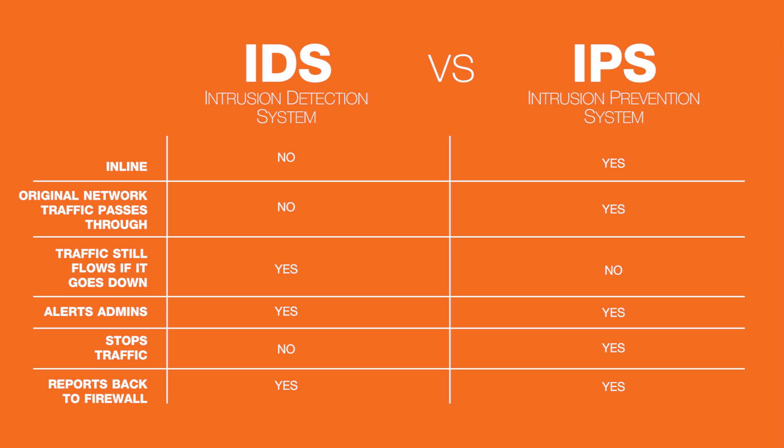An IDS can alert an administrator and even automatically tell a firewall to block traffic based on what it observes. While an IPS can do the same, the IPS can also stop traffic dead in its tracks. The IPS will still report back to a firewall, so traffic could be filtered a lot earlier than where the IPS is located.